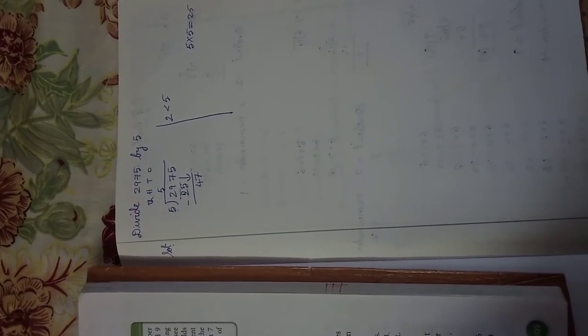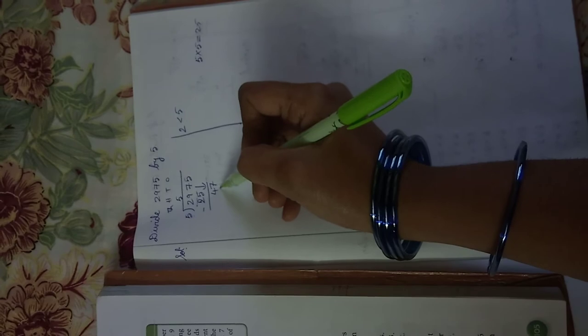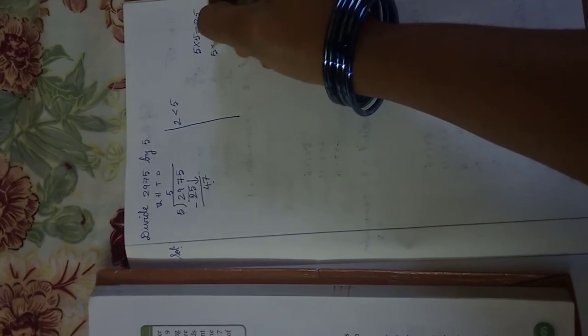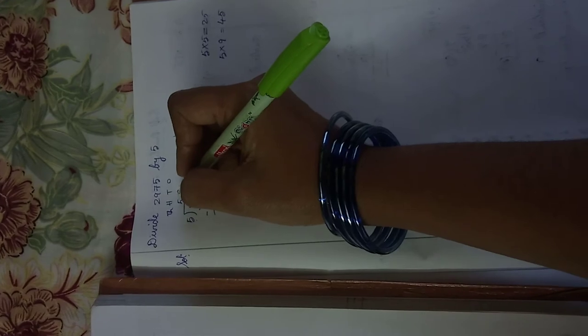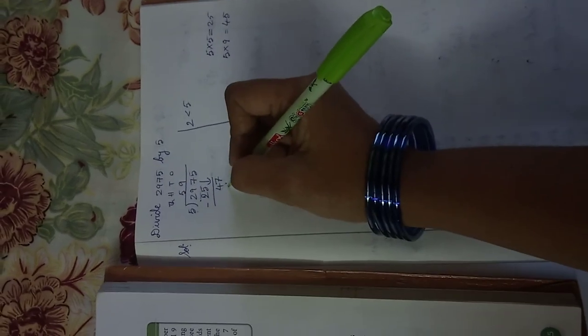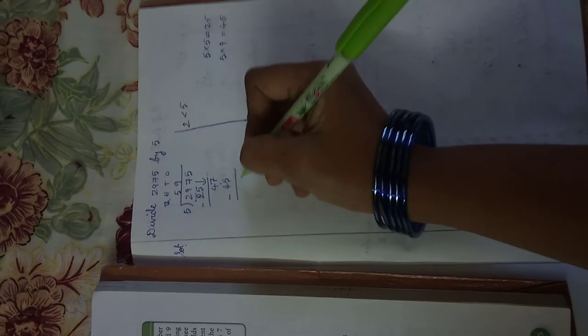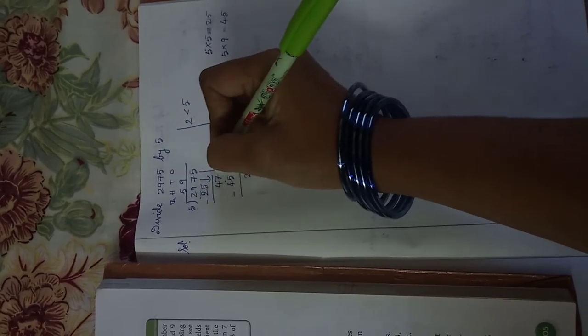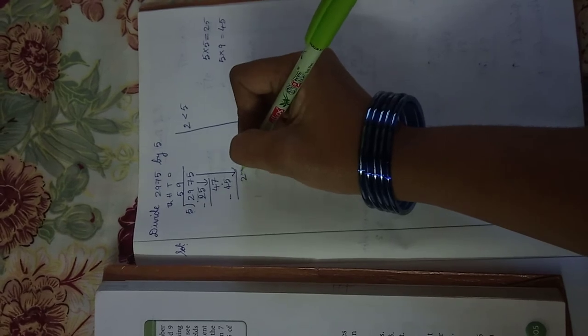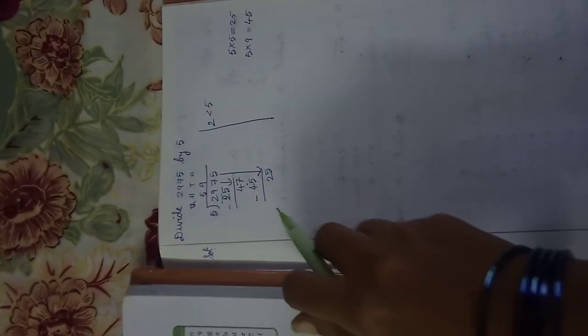So here 47. Again in the 5 table, 5 nines are 45. So in the quotient we write 9. 7 minus 5 is 2. We put down 5, so it becomes 25.